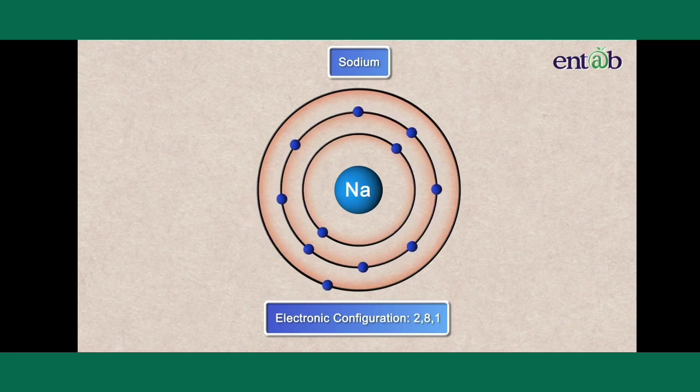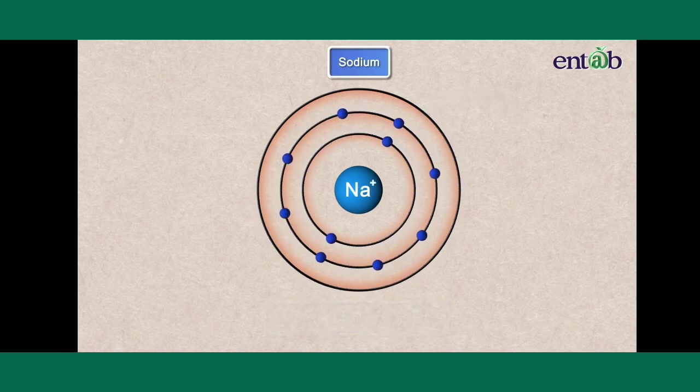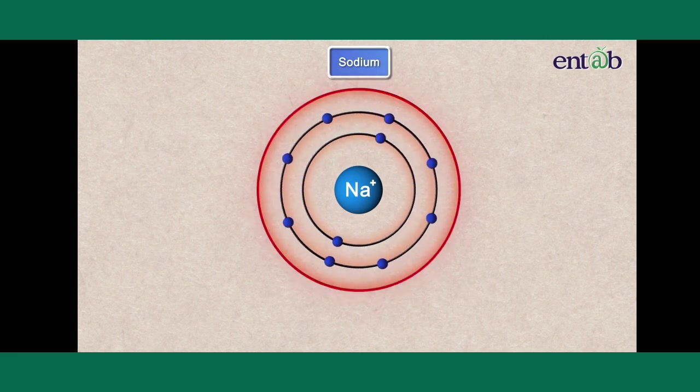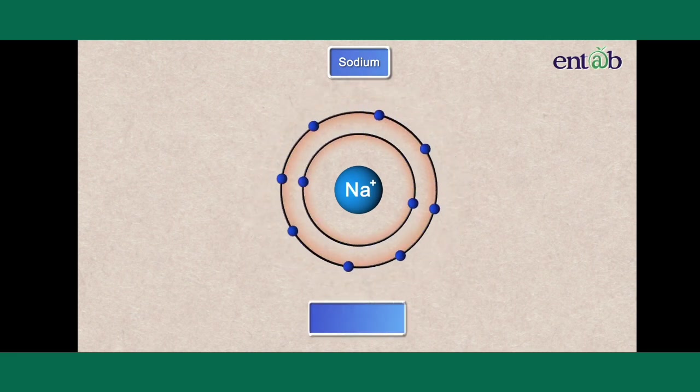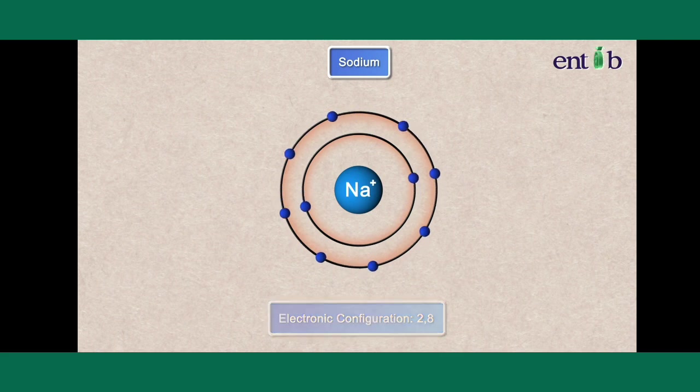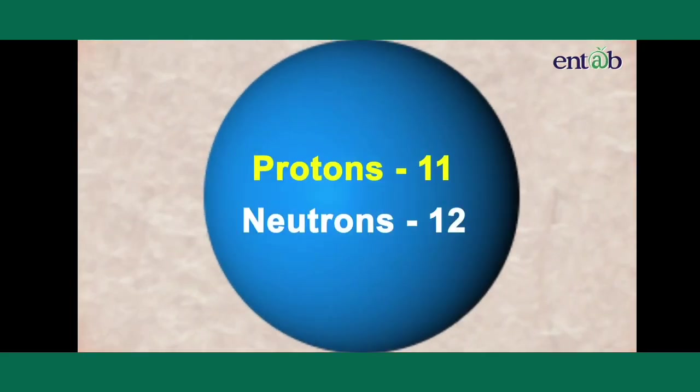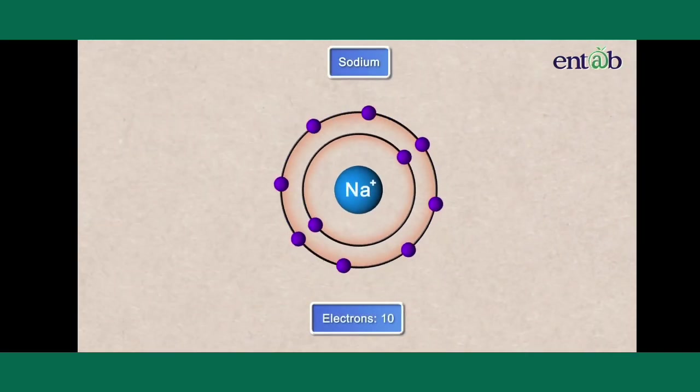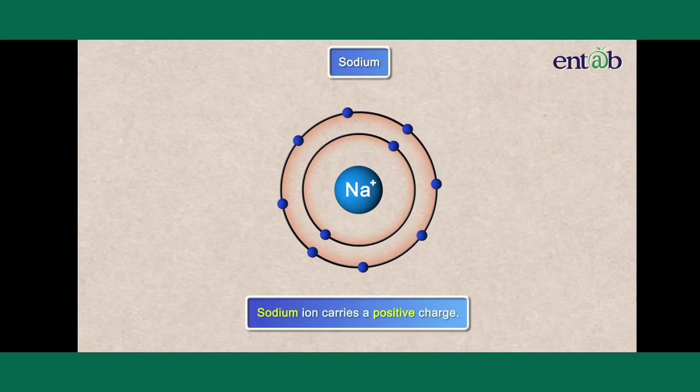So, if it loses one electron from its outermost shell, it will attain the configuration 2,8, which is a stable configuration. Thus, sodium will have one proton more than its number of electrons and will carry a positive charge.